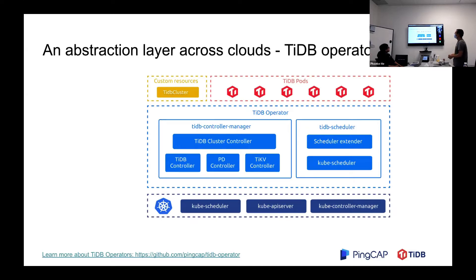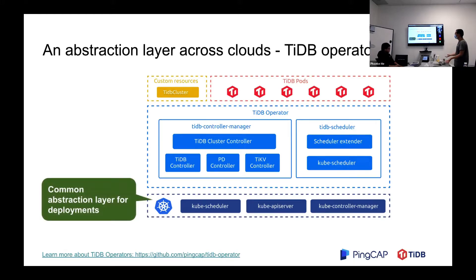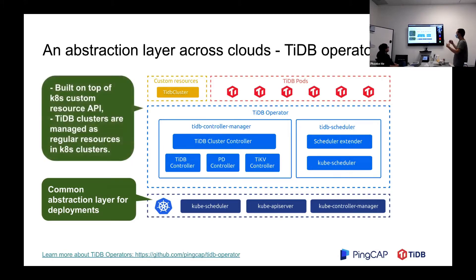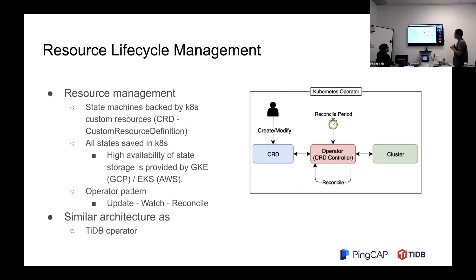The first layer is TiDB Operator — essentially an abstraction layer across cloud. We chose Kubernetes as the common abstraction layer for deployment. Built on top of Kubernetes Custom Resource API, the operator manages cluster resources in Kubernetes, which is really nice. With TiDB Operator, we can already deploy TiDB clusters in Kubernetes. Then we need to control the resource lifecycle — for example, how to start a cluster, configure a load balancer, and establish Private Link peering.